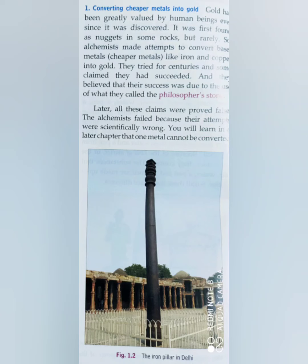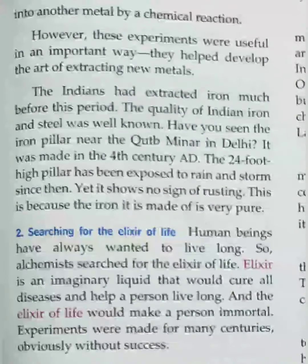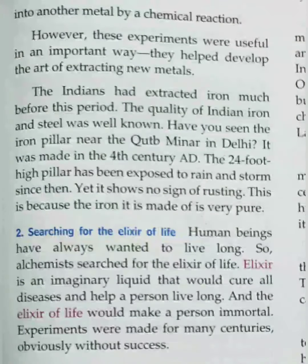The second aim of the alchemists was searching for the elixir of life. The elixir of life is an imaginary liquid — they believed this liquid could cure all diseases and that a person could live long when they consumed it. Alchemists even believed that the elixir of life would make a person immortal, meaning they could live endlessly for eternity without facing death. But all their experiments were unsuccessful.